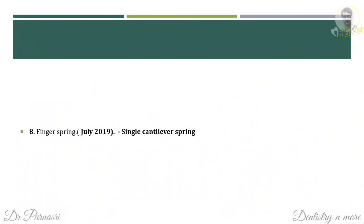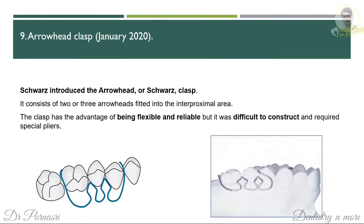The finger spring question requires writing about the single cantilever spring: the indications, which wire to use, the diagram, and how to activate it. The arrowhead clasp was introduced by Schwartz and is also called the Schwartz clasp. It consists of two or three arrowheads fitted in the interproximal areas. The advantage is it is flexible and reliable, but the disadvantage is it is difficult to construct and requires special pliers. That is why it was modified into the Adam's clasp, also called the modified arrowhead clasp.